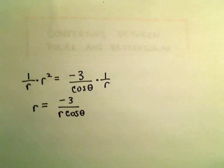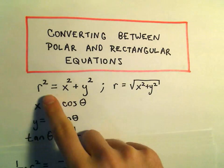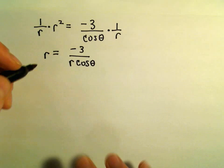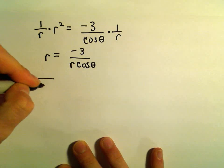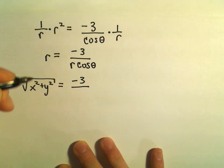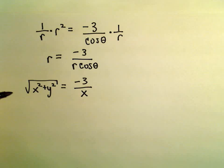So recall that r² was x² + y². Well, r is just going to be the square root of x² + y². And then we have -3. r·cos(θ) is the same thing as x. So at this point, maybe we can get rid of the radical.